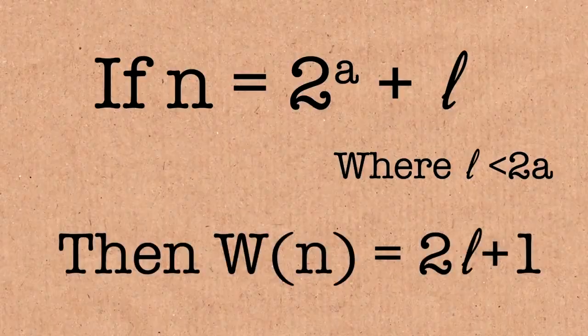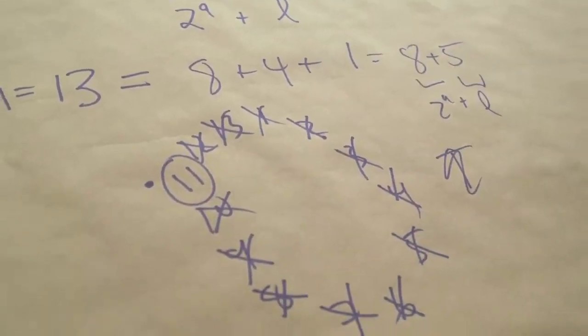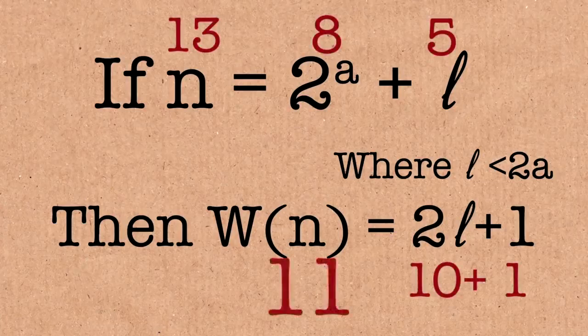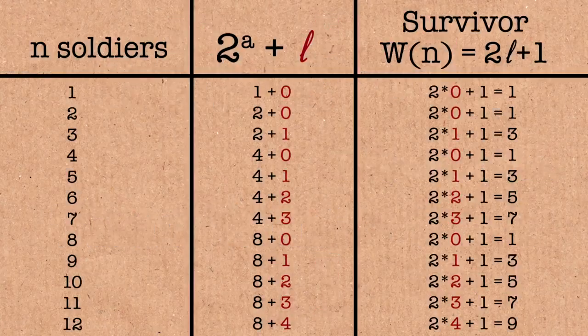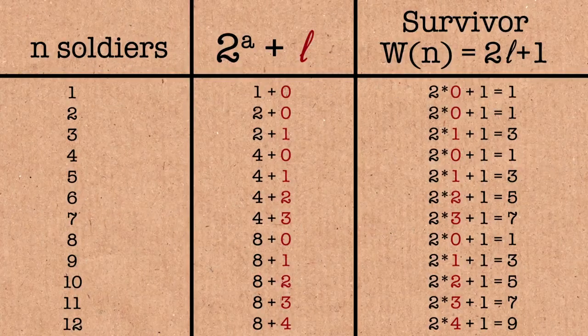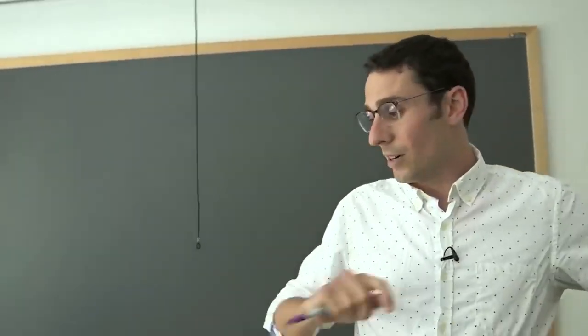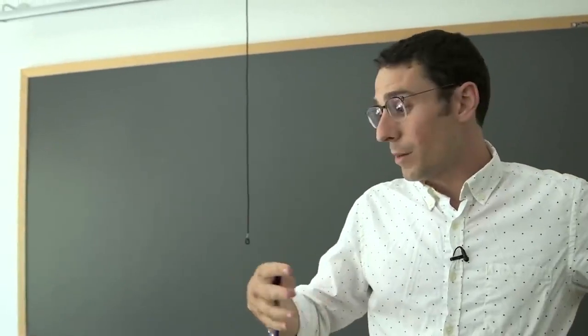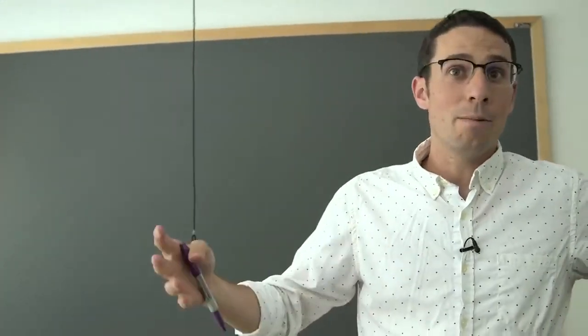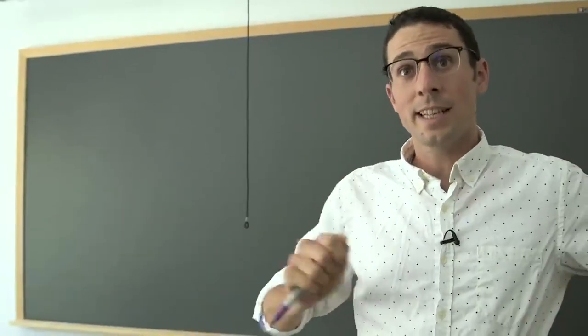So we've already seen it was true here, right? L was five and the winning seat was 11, which is two times five plus one. And if you start going back through, you'll see the same thing for all the answers. We've already really illustrated the mechanism, which is after l steps, it's the turn of person two l plus one. And after l steps, there are a power of two, a number of people left. And when there's a power of two people, the first person, the first person who kills, that's who's going to be the winner.